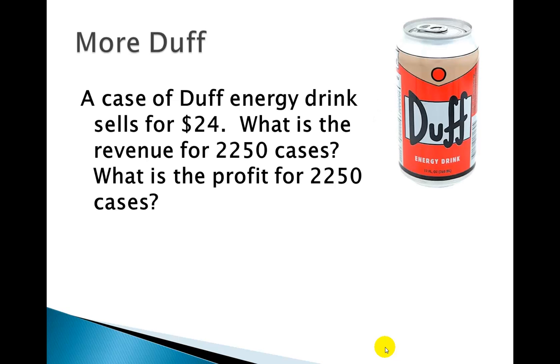So another example. Let's say now we've got our energy drink. We're selling them for $24 per case. So we're looking for the question, what is the revenue for 2,250 cases? The information we have here in this case is this is our revenue. So this is our price, 24. So to calculate our revenue, we have 24 times Q. Plug in the amount, the quantity that we want, the 2,250, do this nice little multiplication, and we get a total revenue of 54,000.